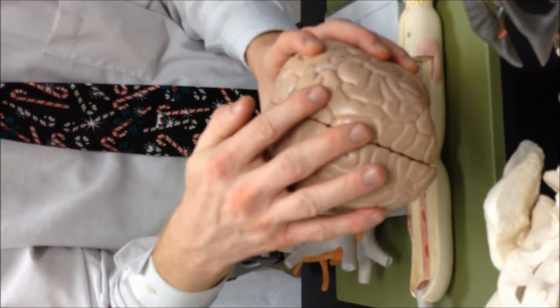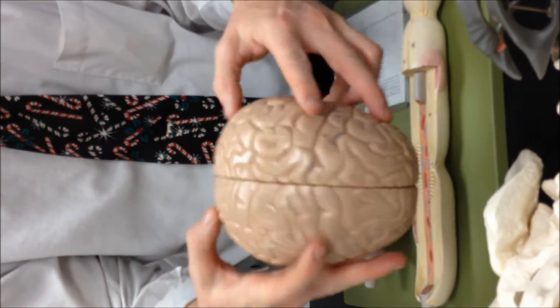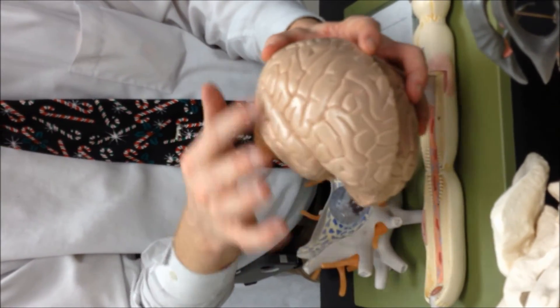All right. And then the lobes, you have the frontal lobe and the parietal lobes. Back here are the occipital lobes. And then on the sides, the temporal lobes.